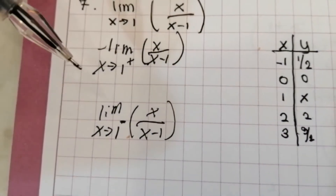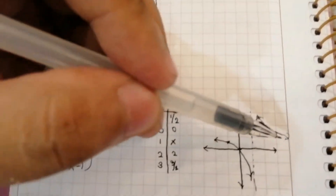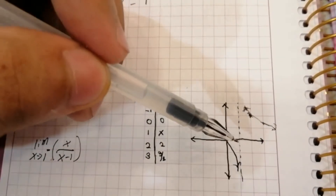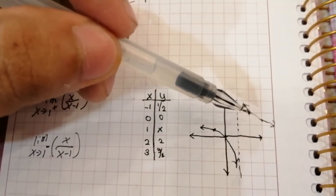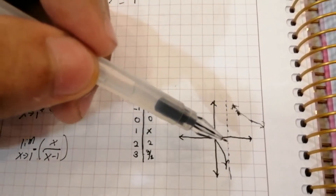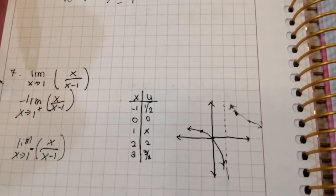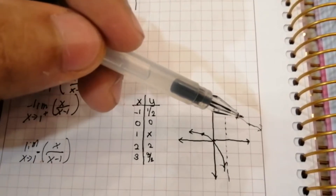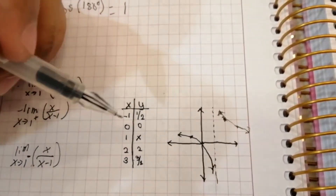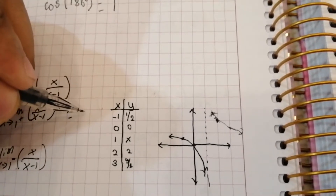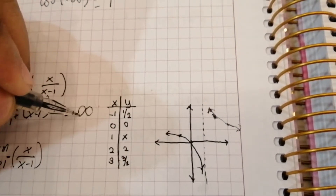Our question now is x approaches 1 from the positive side. From the positive side, we observe where the line goes as it gets closer and closer to our asymptote, which is 1. As it gets closer, it goes up — it approaches positive infinity.